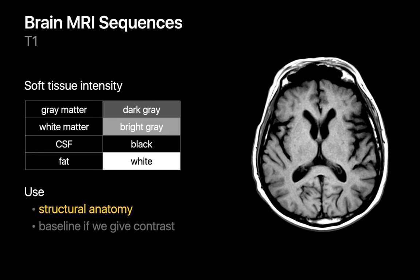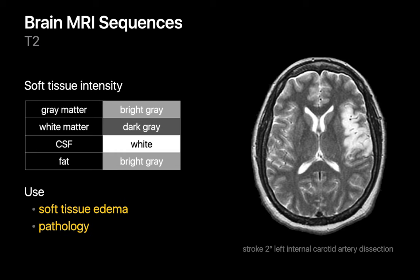Our second standard brain MR sequence is T2-weighted imaging. On T2-weighted images, water appears white, and as a result, CSF appears white. Everything else appears as some shade of gray. On T2-weighted imaging, normal white matter appears as a darker shade of gray than gray matter does, which is the opposite of their relationship on T1-weighted imaging. We generally use T2-weighted imaging to assess for soft tissue edema and for pathology, since edema is often present in pathologic processes, such as in a patient's left-sided stroke.